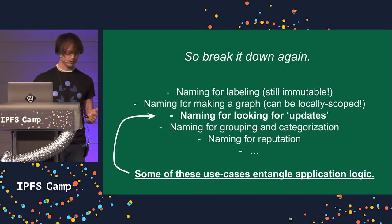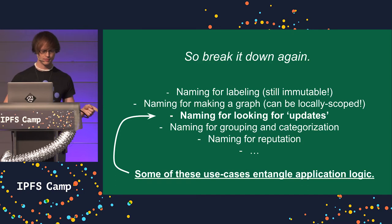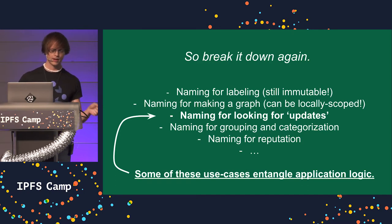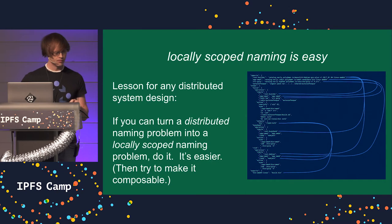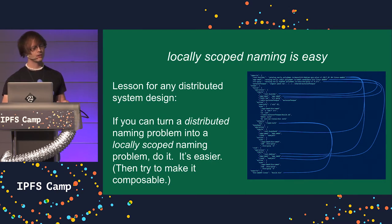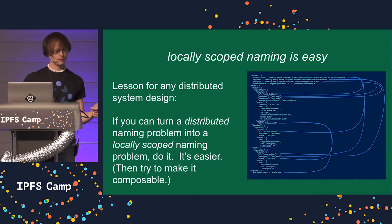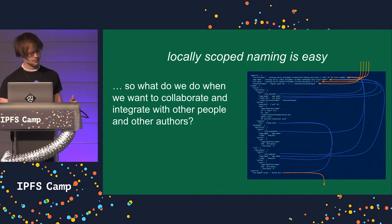Some of these problems are interesting because they entangle application logic — such as the concept of updating: package managers have different opinions about how to get up to date on things. So here's a general lesson for distributed system design: anytime you can turn a distributed naming problem into a locally scoped naming problem, do it. It's much easier. Then come back and try to make it composable.